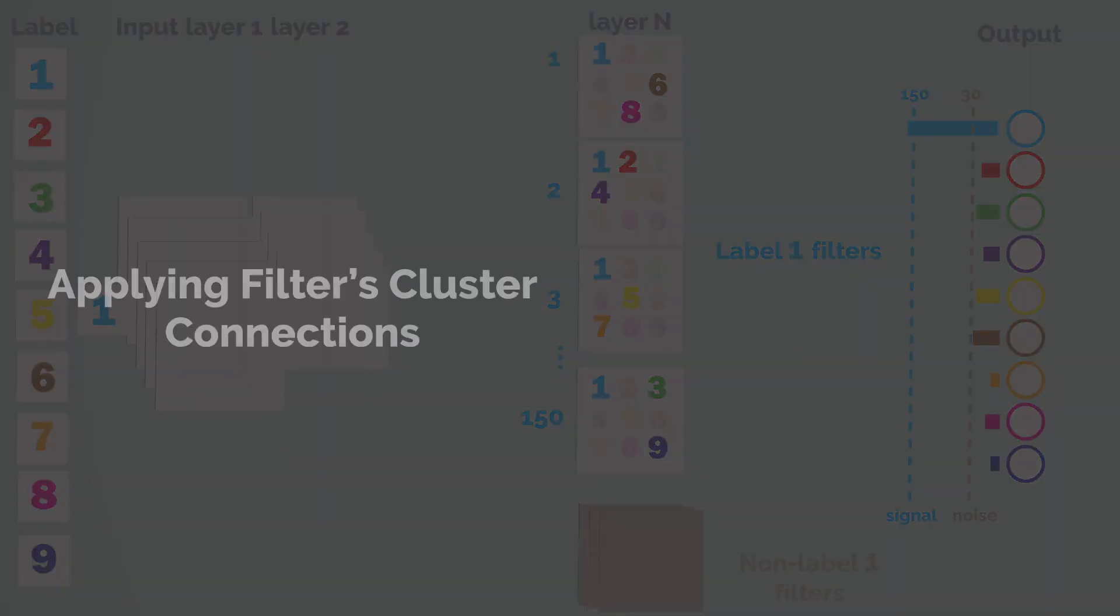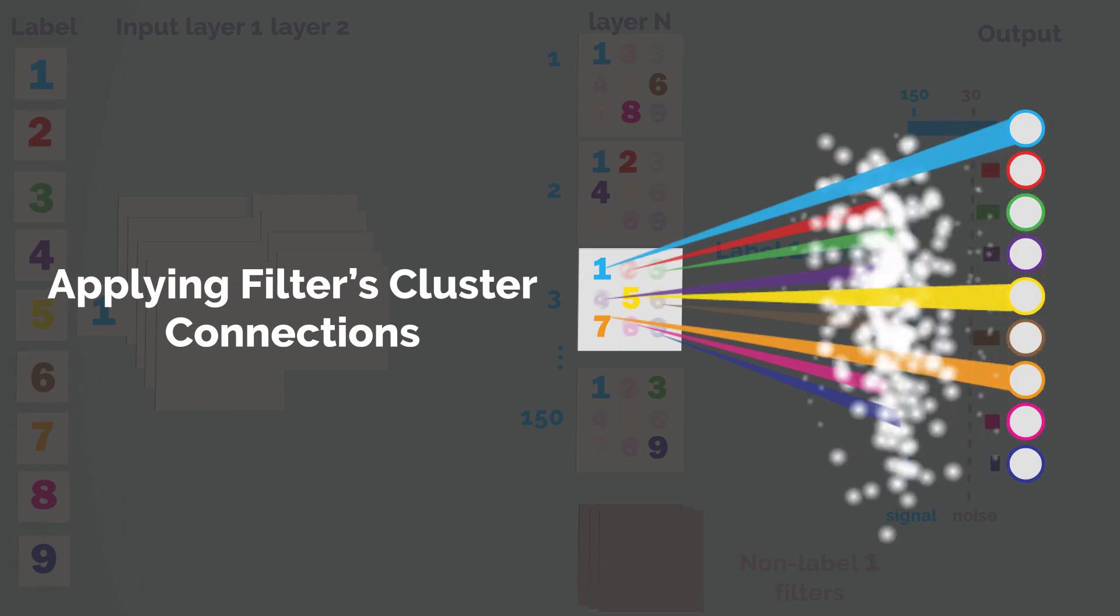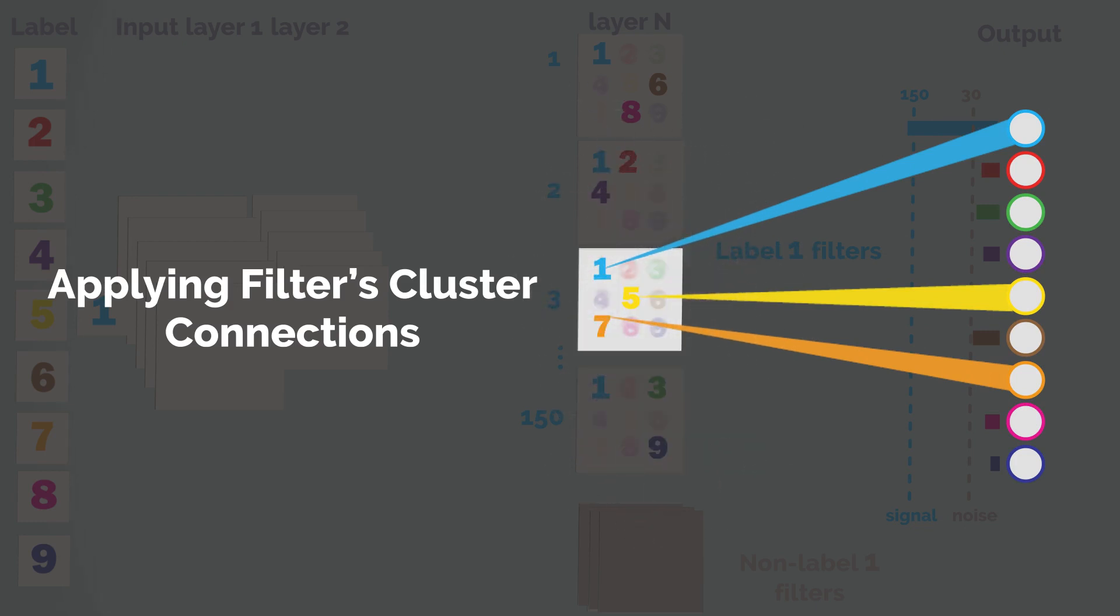Another way to reduce complexity while maintaining accuracy is to apply filters cluster connections. We look at a single filter. Each filter is connected to all output units via weights. Using the knowledge of the cluster of each filter, we can dilute the weights that do not belong to that filter's cluster.